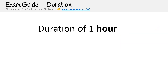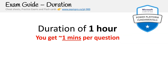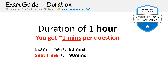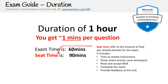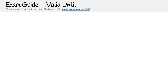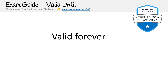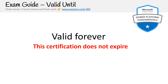The duration of the exam is one hour or 60 minutes, so you have a little more than one minute per question. The exam time is 60 minutes, but the seat time is 90 minutes. Seat time refers to the time needed to review instructions, show the online proctor your workspace, read and accept the NDA, and complete the exam and provide feedback. When you do pass the exam, it is valid forever — Microsoft's fundamental level exams do not expire and you do not need to do a recertification. That about covers the introduction of the course.